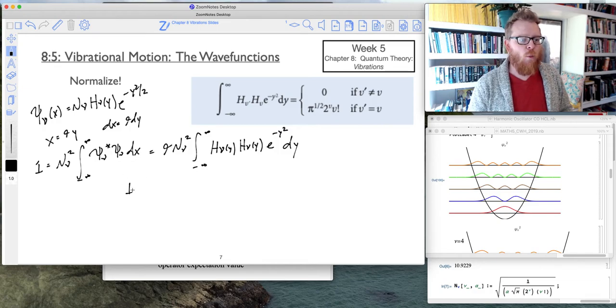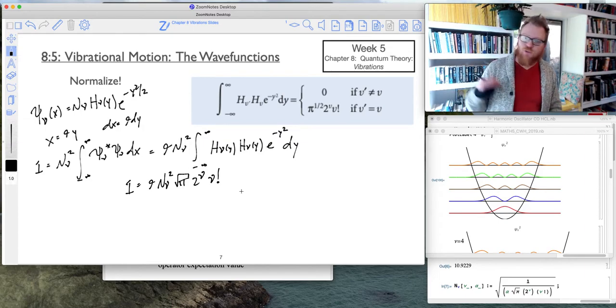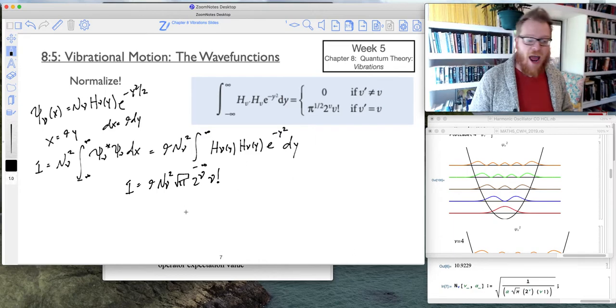So we know that it's one equals alpha times that normalization constant times pi to the one half, so I'll just write that as square root of pi times two raised to the nu power times nu factorial. Don't forget about factorials.